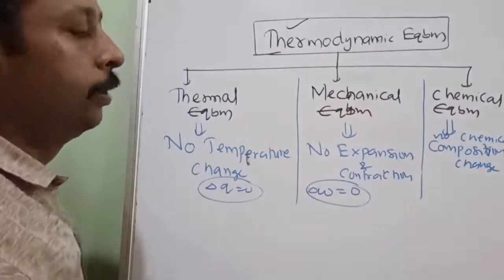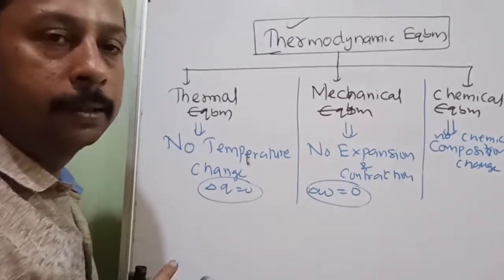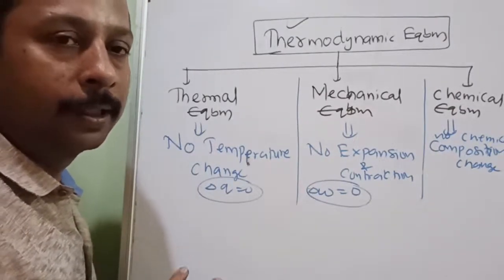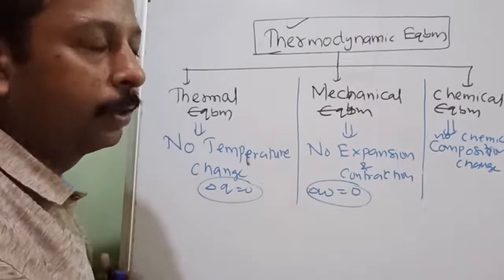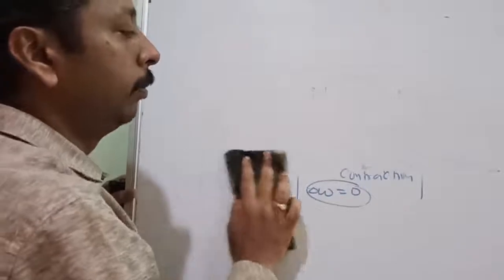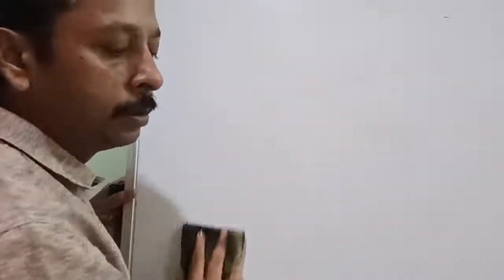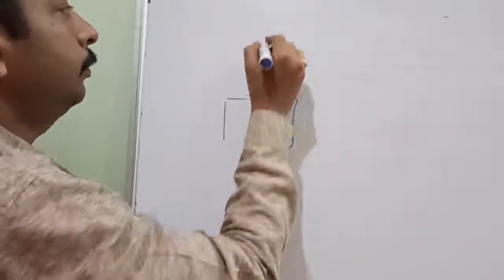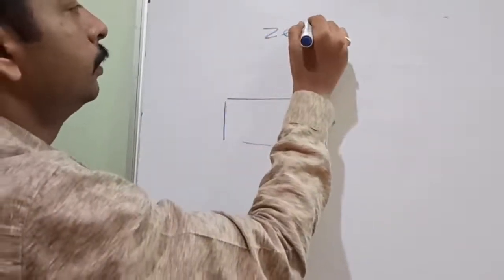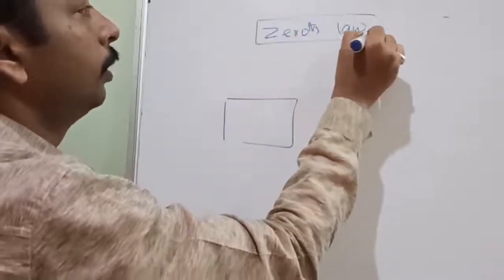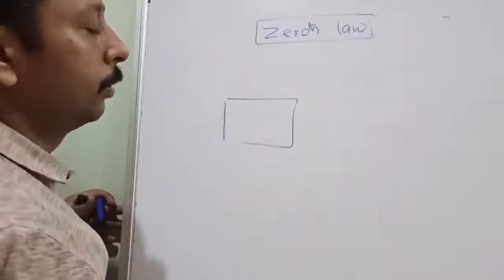Now we are going to study about the zeroth law of thermodynamics. Let us take two systems in thermal equilibrium with a third system.